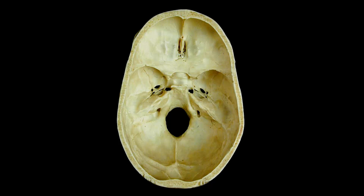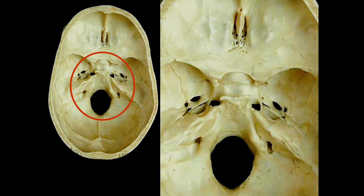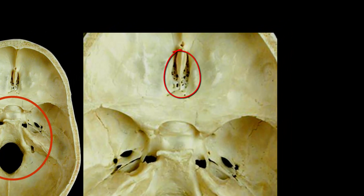Now this is looking inside the skull — the top, or calvarium, has been removed. Looking at the central area, up at the top here we see the cribriform plate. Cribriform actually means full of holes. These little holes are for the olfactory nerves, so we're going to call these the olfactory foramina.